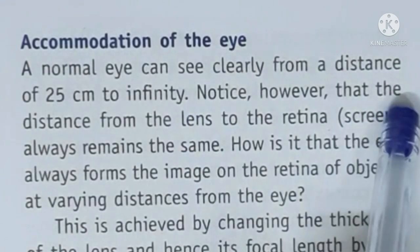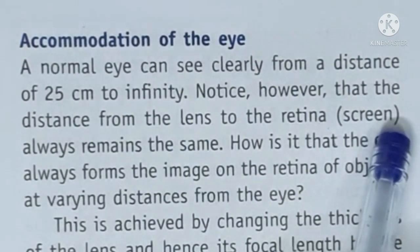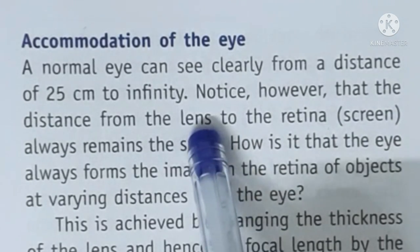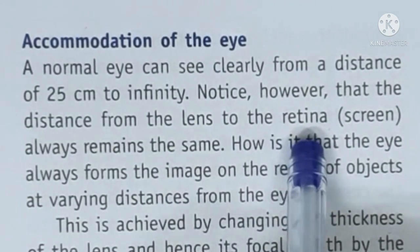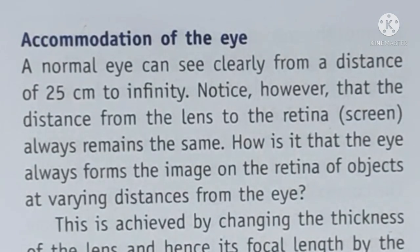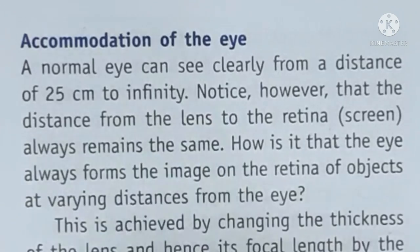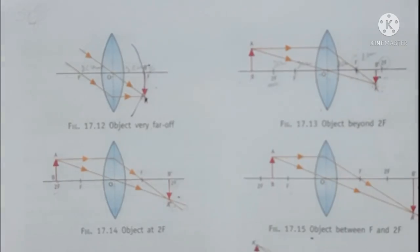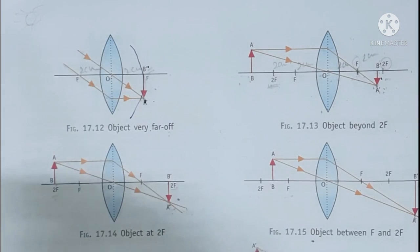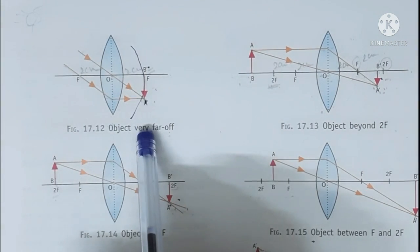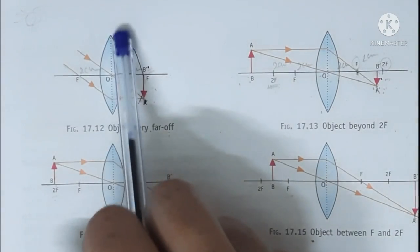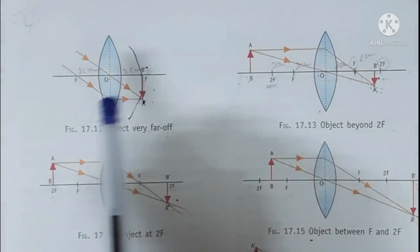Ab yahan pe ek cheez yaad rakhni hai ki jo distance hai aapki aankhon mein lens aur retina ke beech ka — toh lens jo hota hai aur retina ke beech ka distance hai, yeh to hamesha same rehta hai, thik hai. Ab yoh ray diagram yaad ho toh — yoh convex lens hai — aur convex lens mein humne dekha ki hum different positions pe jo object ko rakhte hain, jo image form ho. Suppose karo ki aapka lens jo hai uski thickness fixed hai — in every ray diagram the thickness of your lens is fixed.